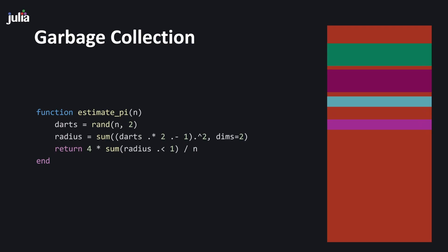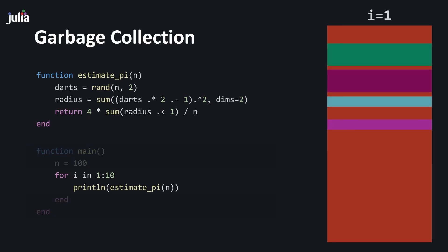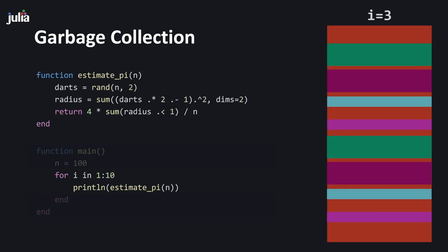Let's look at the consequences in a wider context. Say we have a main function that prints 10 estimates of pi, all using 100 random samples. After one iteration of the loop, estimate_pi will have allocated four arrays on the heap. When the function returns, those arrays are not automatically cleaned up. On the next iteration, another four arrays are needed. As we call this function more and more, the heap fills up and it becomes harder to find free memory. On the third iteration the heap is practically full — there are no contiguous blocks big enough to store the required arrays, and the Julia runtime triggers garbage collection.